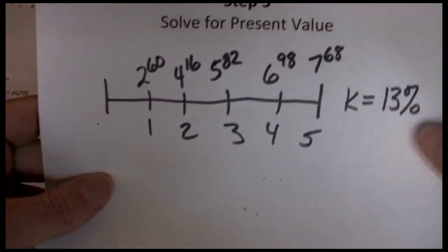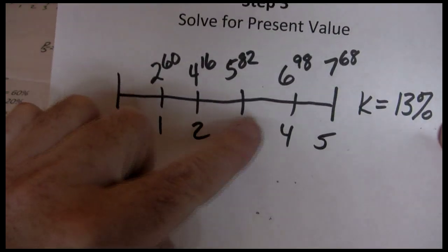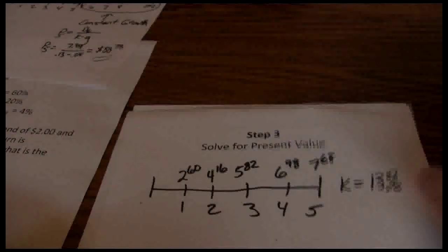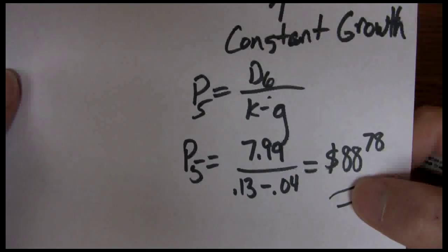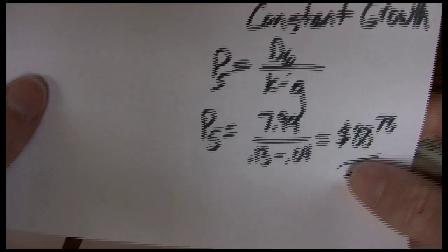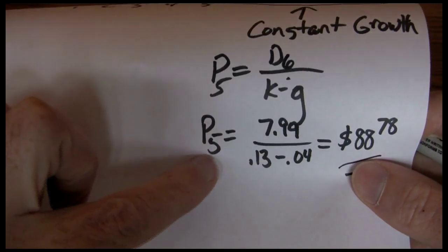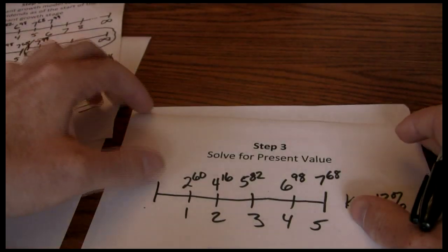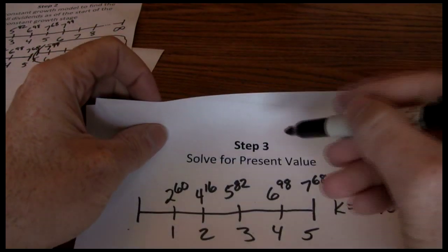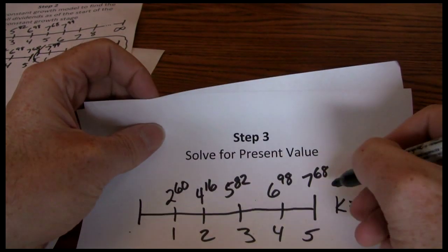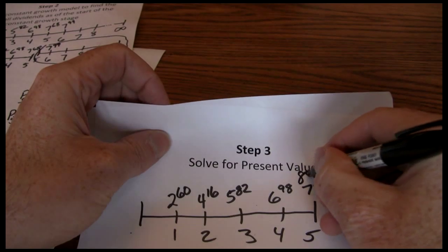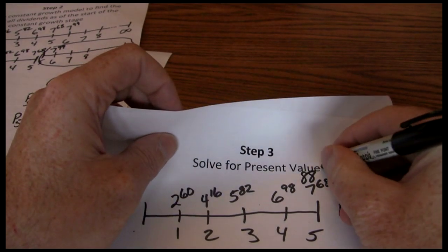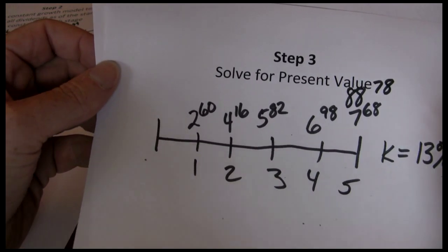Our timeline has the dividends in years one, two, three, four, and five. However, we also know that all the remaining dividends are worth $88.78 as of year five, so that's a year five cash flow as well. In addition to that $7.68, we're also going to receive $88.78 in year five.